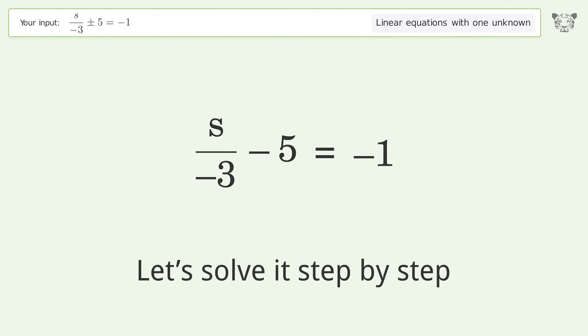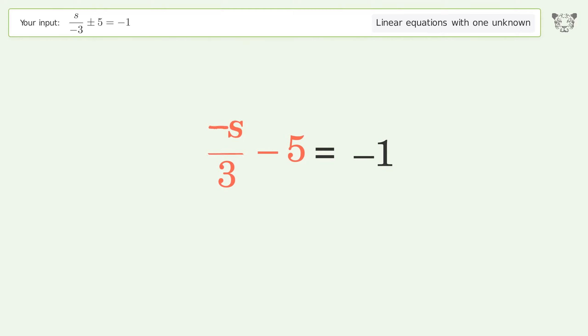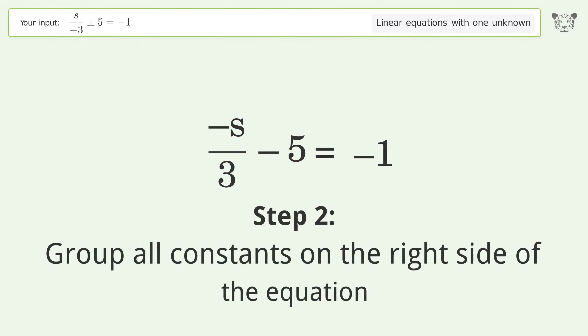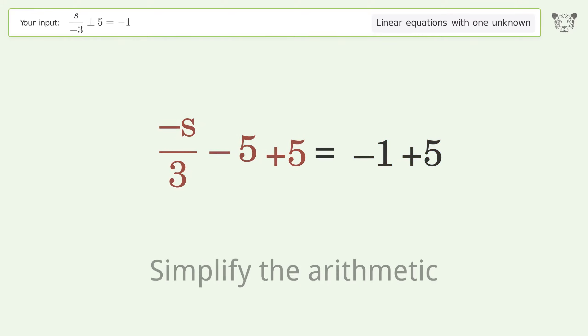Let's solve it step by step. Move the negative sign from the denominator to the numerator. Group all constants on the right side of the equation. Add 5 to both sides. Simplify the arithmetic.